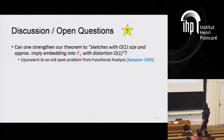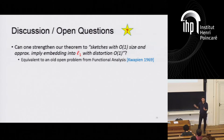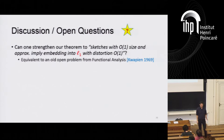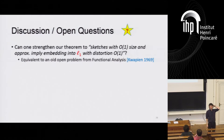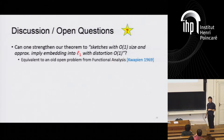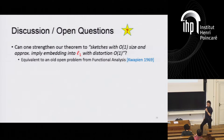The distortion drops with epsilon — it is divided by epsilon. So the closer you get to L_1, the worse the approximation. Another interesting direction: this theorem holds for norms only, and there are a few places in the proof that use that fact. The question is whether we can extend this to metrics.